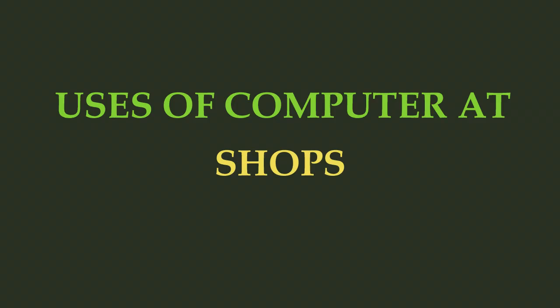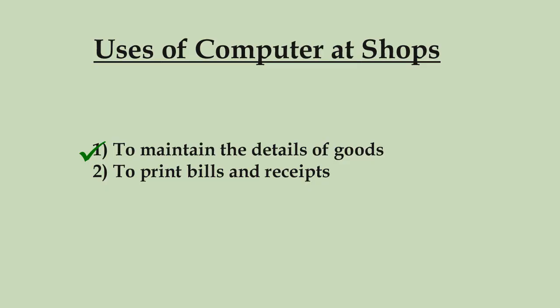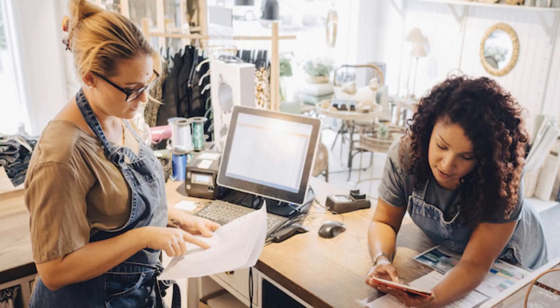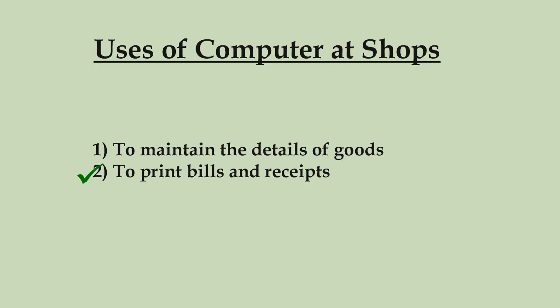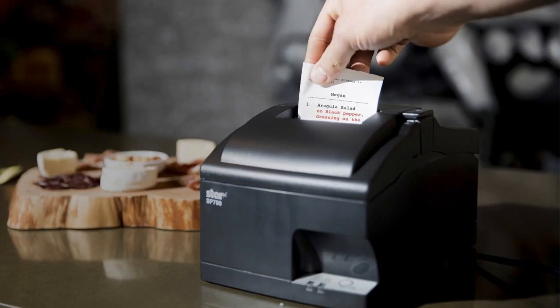Now the uses of computers at shops: Number one, to maintain the details of goods — computers are used by shopkeepers to maintain the details of goods which are stored in their shops or sold to customers. Number two, to print bills and receipts — computers are also used to print bills and receipts for customers, with the help of a printer.